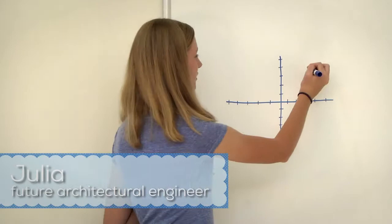Today we're going to learn about graphing. A coordinate graph has four quadrants and they're labeled as such.